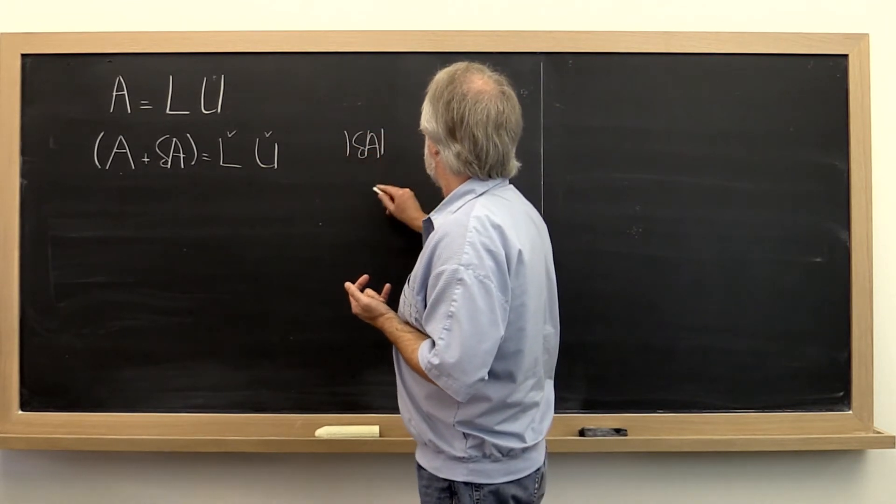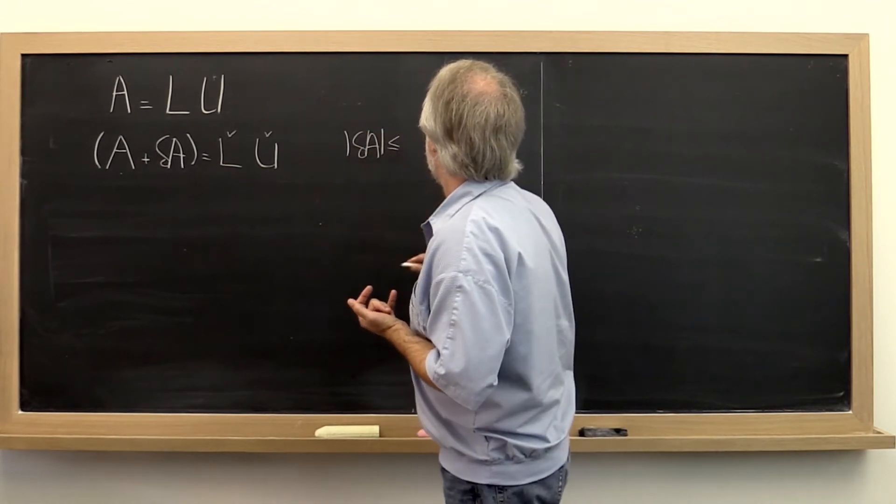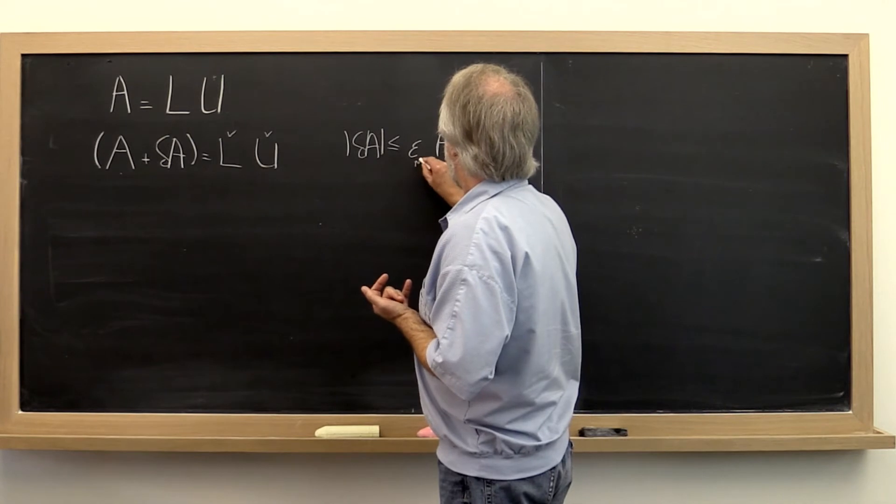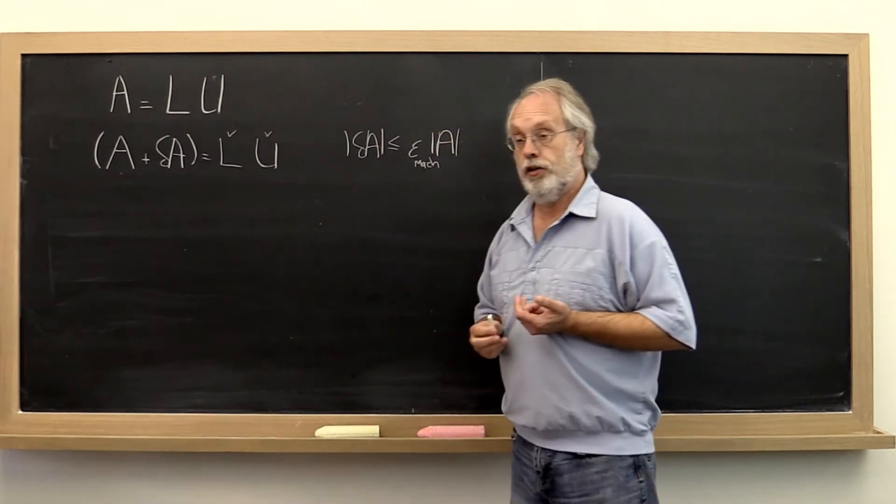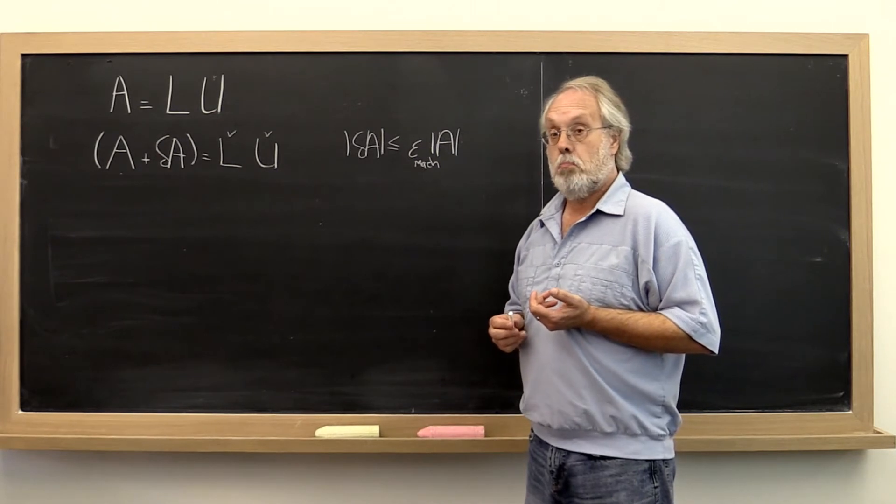So it would be nice to be able to say this is less than or equal to the machine epsilon times the absolute value of A. That'd be great.